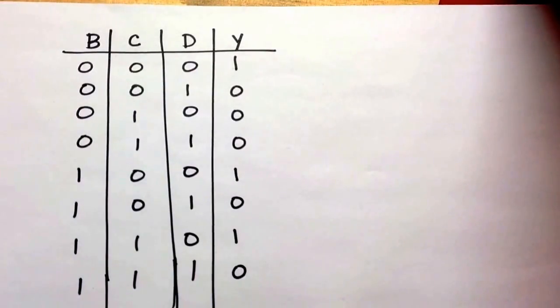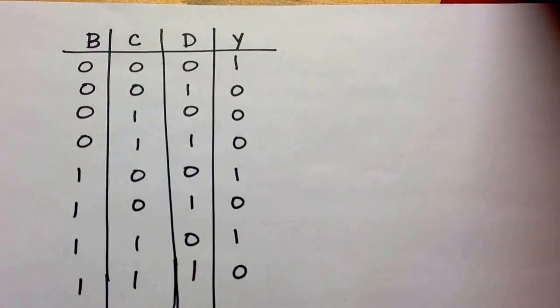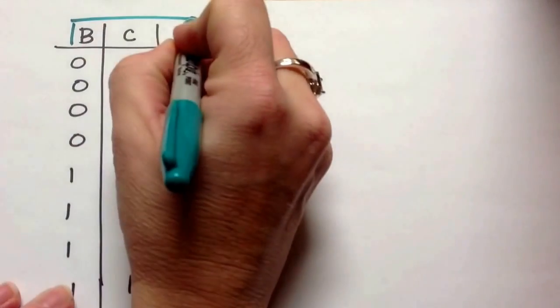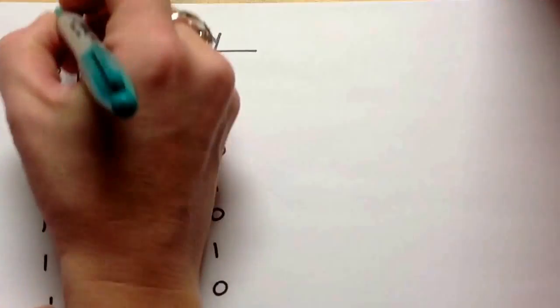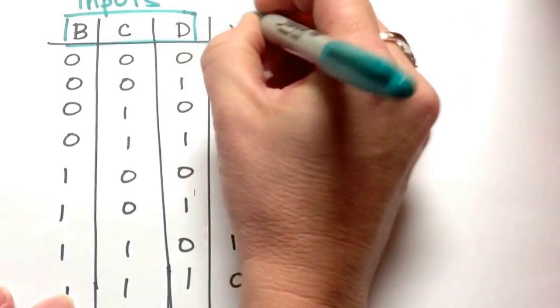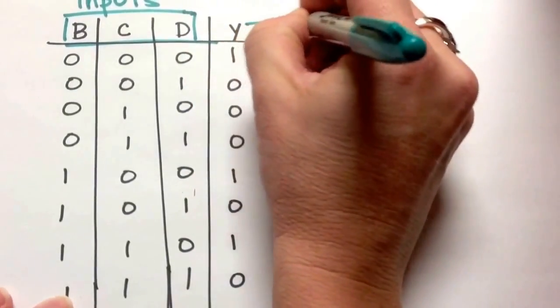So now in this video I want to show you a sample from a three input logic table. This one has the inputs called, for whatever reason, B, C, and D. Y is going to be our output.